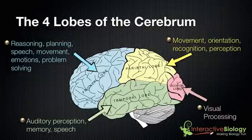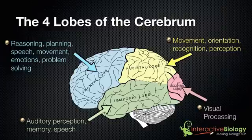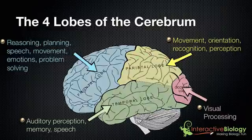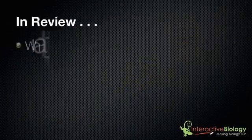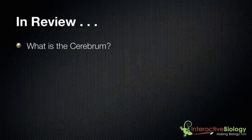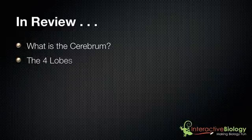As you can see, there are a bunch of intellectual functions being controlled by the cerebrum of the brain, and we have a general idea now of what regions are involved in what types of processing. In review, we've answered the question of what the cerebrum is, and we looked at the four lobes and spoke about their functions.